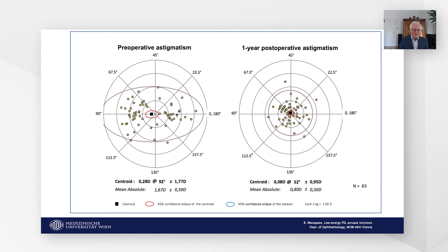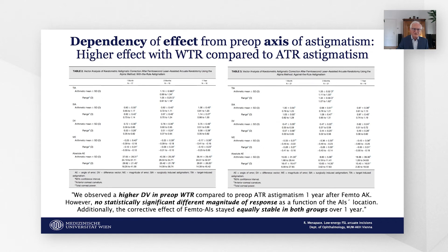This graph shows the centroid, the 95% confidence ellipse of the centroid in red, and the 95% confidence ellipse of the whole dataset in blue, preoperatively and at one year post-op. The centroid decreased from 0.28 to almost nil and mean absolute astigmatism decreased from 1.67 to 0.5 diopters with a standard deviation of 0.5 diopters. We observed a higher difference vector with preoperative with-the-rule compared to preoperative against-the-rule astigmatism at one year; however, the difference in magnitude of response was not statistically significant. The corrective effect of femtosecond arcuate incisions stayed equally stable in both groups over one year.